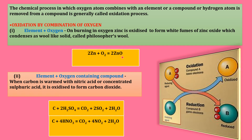When zinc and oxygen react, zinc oxide (ZnO) will be formed. From zinc to zinc oxide, this is an oxidation process. On burning in oxygen, zinc is oxidized to form white fumes of zinc oxide, which condenses as a wool-like solid called philosopher's wool. Always remember zinc oxide is a wool-like solid after condensation, which is called philosopher's wool. This is formed when zinc reacts with oxygen.